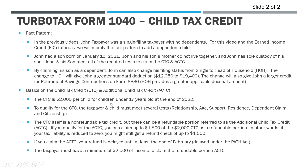Let's cover some basics on the CTC and then we'll get into the return. For 2022, the child tax credit is $2,000 per child under age 17 — so the child has to be 16 years old or younger. If they turn 17 on the last day of the tax year, you don't get this. In order to qualify, the taxpayer and child have to meet a number of different tests: the relationship test, age, support — so the child cannot provide more than half of their own support — residency (the child has to live with you), you have to claim them as a dependent, and citizenship. The child has to be a U.S. citizen or U.S. resident alien. In this case, John's son is a U.S. citizen, so he's going to meet that test.